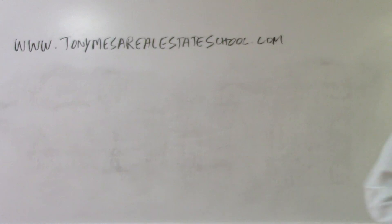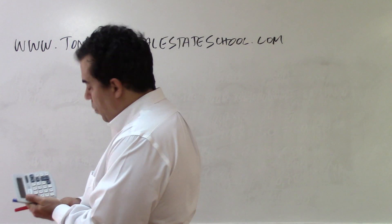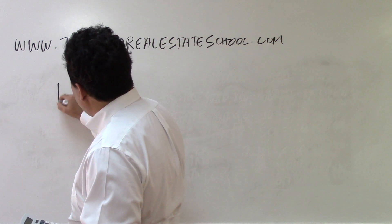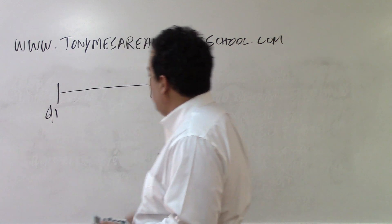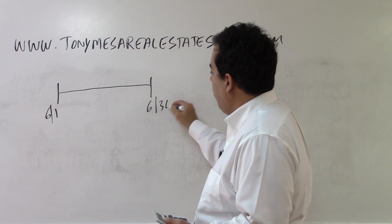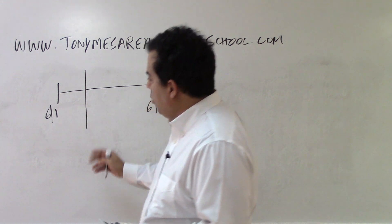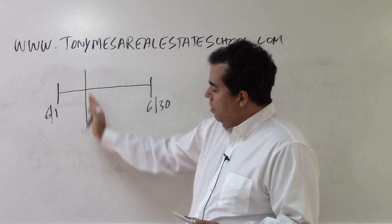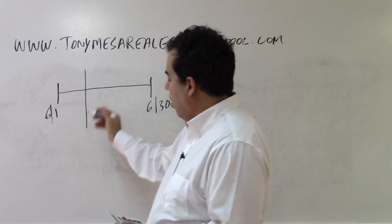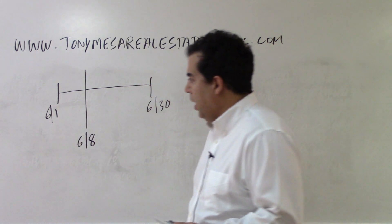We have the month of June, and the month of June is a 30 day month. Here is June 1st and here is June 30th, and the day of closing we said was June 8th. Notice I don't just draw that in the middle, I draw it a little bit towards this side approximately where it would belong. That sometimes helps you catch a mistake if you're doing a proration problem.